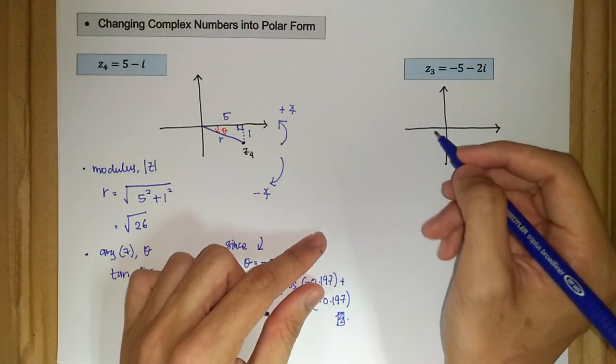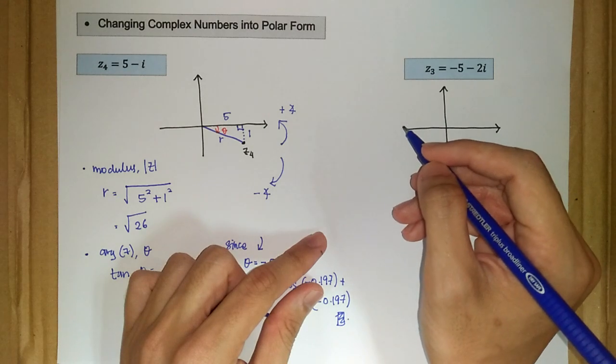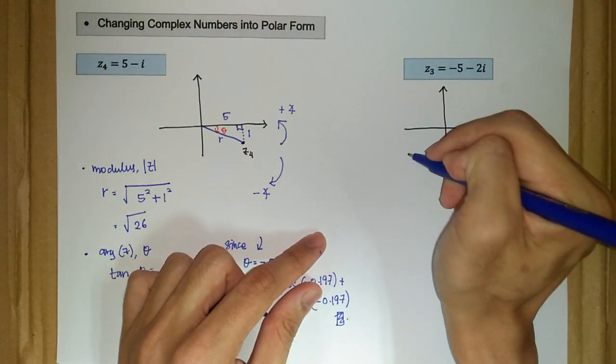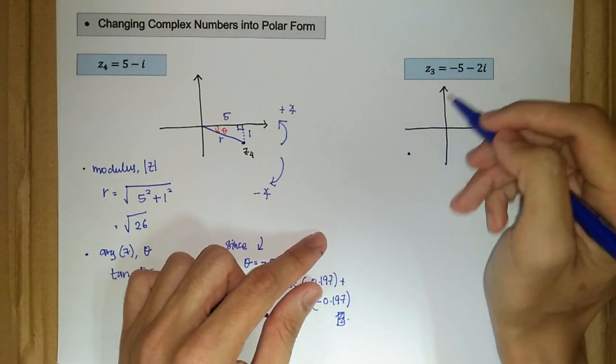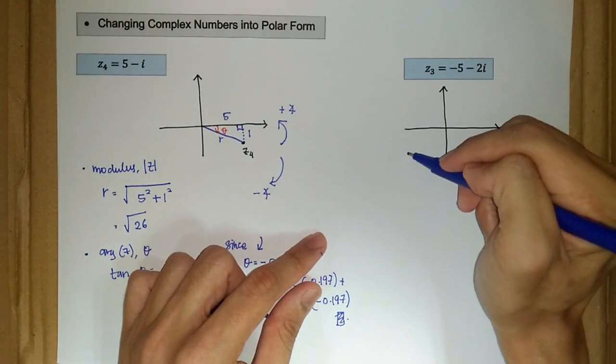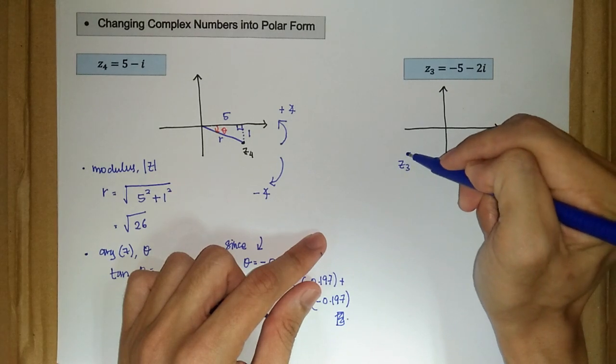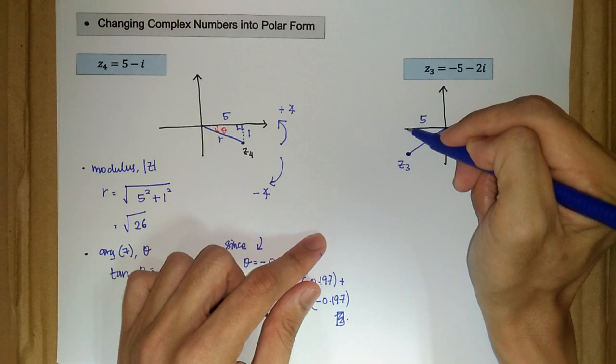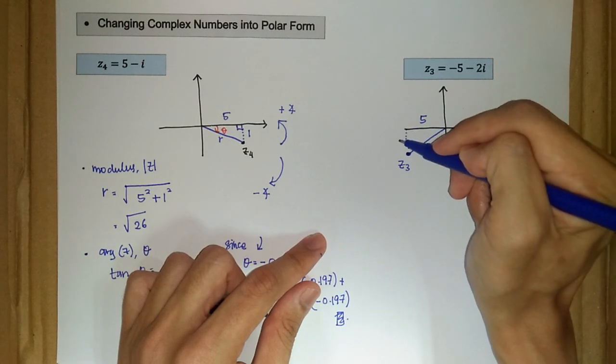So we have negative 5 for the real axis, and negative 2 for the vertical axis. So it should be, negative 2 for the vertical axis, so we have z₃ here. So we have 5 units to the left and 2 units here.